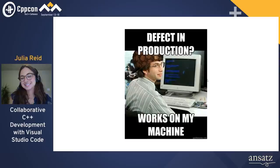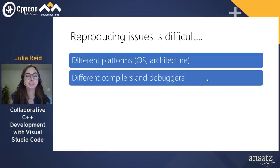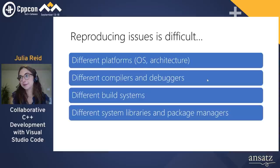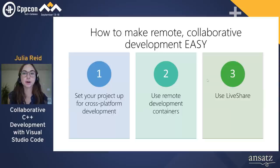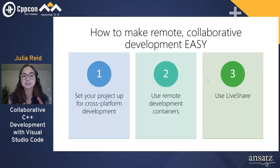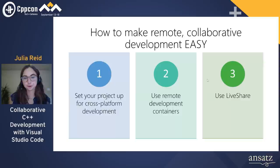Reproducing issues from one machine to another can be tough for a number of reasons. You could be using different platforms — different operating systems and architectures — different compilers and debuggers, different build systems, different system libraries and package managers, and some projects have platform-specific dependencies. So I'm going to give you three recommendations today to navigate these problems and make remote collaborative development a little bit easier.